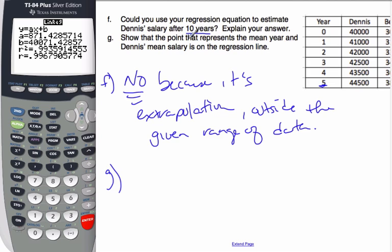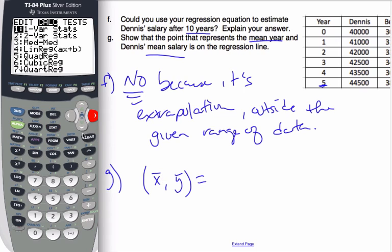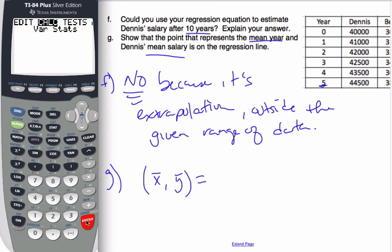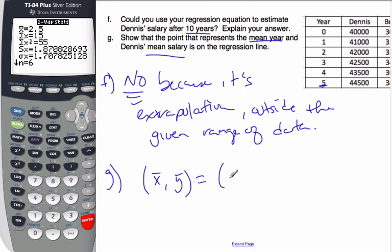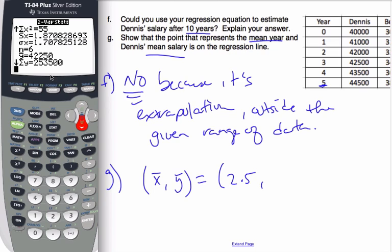G part now says show that the point that represents the mean year and Dennis' mean salaries on the regression line. That means we want to find X bar, which means the mean, comma, Y bar, which is Dennis' salary. To find these values, again, I'm going to turn to my calculator. I'm going to calculate and I'm going to use two variable statistics. This is the only time I use two variable statistics. Hit enter. List one, list two, again, are my lists for my years. Frequency is blank, and I'm going to calculate. I see that X bar is 2.5. And you notice there's an arrow here, that means there's more information to see. So if I scroll down, I see Y bar is 42,250.